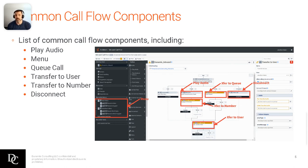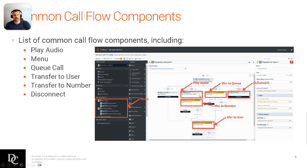So common call flow components — here are a few: play audio, menu, queue transfer, transfer to user, transfer to number, and disconnect. In this screenshot you'll see along the left-hand side there are menus — a main menu and an after-hours menu. These are what we'll be creating in further hands-on exercises; there are three or four hands-on exercises just in this module alone. Here's play audio — it's an easy click or drag from the toolbox. You can transfer to the ACD, which is a queue to support — a group of people that might be in that queue to answer that call. You can disconnect a call, transfer to an external number, or transfer to a user, and play audio and transfer however you want.